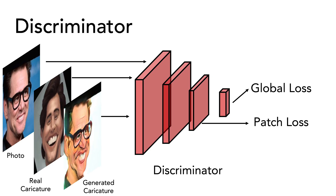Two types of adversarial losses are computed from the discriminator. The patch adversarial loss takes the last feature map as input and distinguishes between the visual style of the photo, real caricature, and fake caricature. The global adversarial loss takes a compact feature vector from the fully connected layer and distinguishes not only the visual styles but also the identity in the input image. The details of the loss functions can be found in our paper.